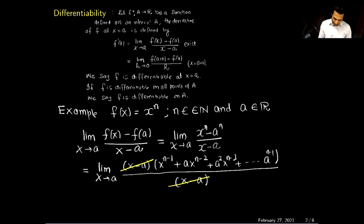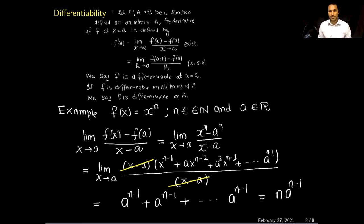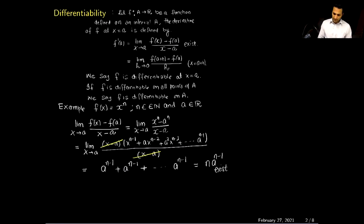After canceling (x minus a), I substitute x = a and get a^(n-1) + a·a^(n-2) + ... + a^(n-1). Each term becomes a^(n-1), and since there are n such terms, I get n·a^(n-1). This is a real number, therefore the limit exists and equals n·a^(n-1). So the derivative of this function exists at a and equals n·a^(n-1).